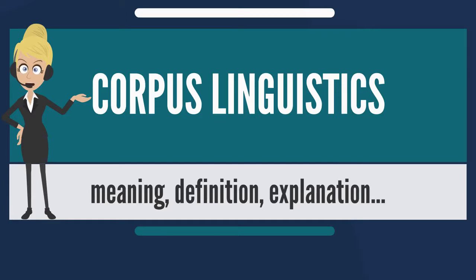Some of the earliest efforts at grammatical description were based at least in part on corpora of particular religious or cultural significance. For example, Pratishakhya literature described the sound patterns of Sanskrit as found in the Vedas, and Panini's grammar of classical Sanskrit was based at least in part on analysis of that same corpus.